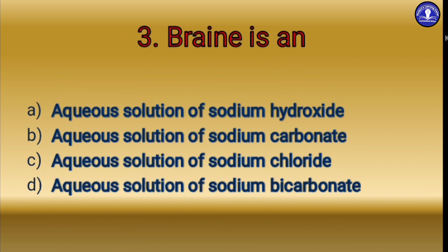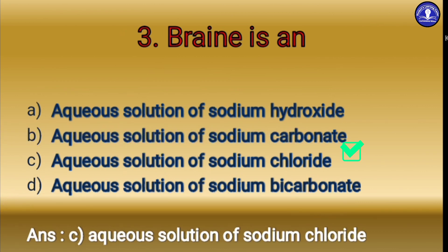The next question: brine is — option A aqueous solution of sodium hydroxide, option B aqueous solution of sodium carbonate, option C aqueous solution of sodium chloride, option D aqueous solution of sodium bicarbonate. The correct answer is option C: aqueous solution of sodium chloride. The chemical formula of sodium chloride is NaCl, also called common salt or table salt. Natural brine occurs in salt lakes or seawater — brine is a highly concentrated solution of sodium chloride.